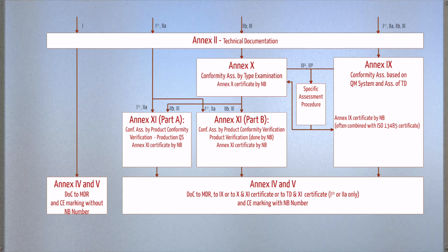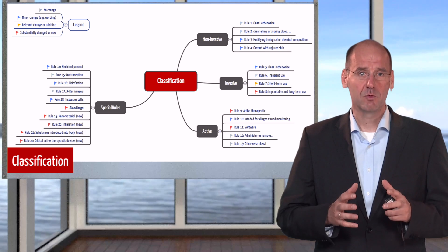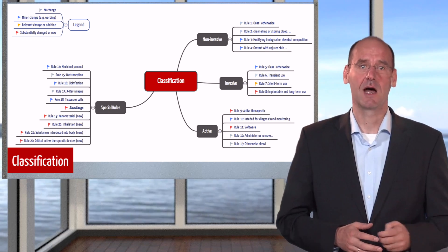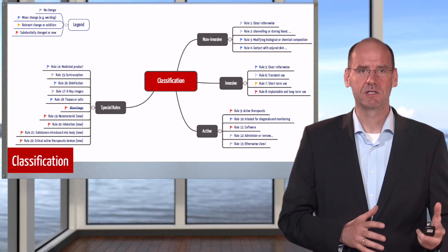Talking about the classes: as already mentioned, there are four classes — 1, 2A, 2B, and 3 — and in a way, class 1 star, which makes it five classes. In contrast to the FDA, there is no database linking products or product types to a certain class. The Medical Device Regulation defines 22 classification rules in Annex 13. These rules consider the criticality, whether the product is invasive and, if yes, for how long. There are rules for active devices and for devices containing nanomaterials or medicine. If you need any help with classifying your product, just let us know.